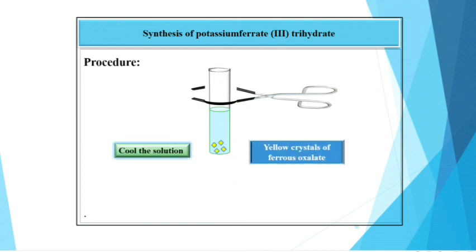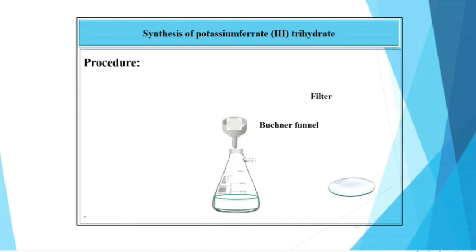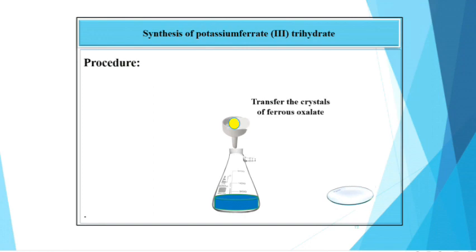Here, yellow crystals of ferrous oxalate will appear. Now, filter this solution through Buchner funnel and then wash it with hot water and finally with acetone. Now, transfer these crystals on watch glass.